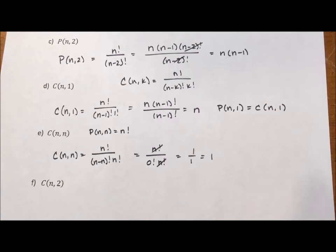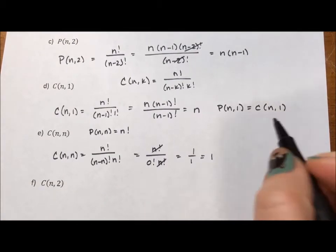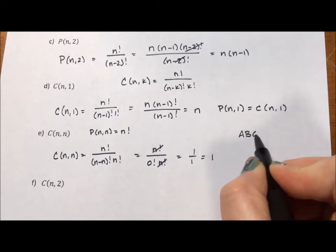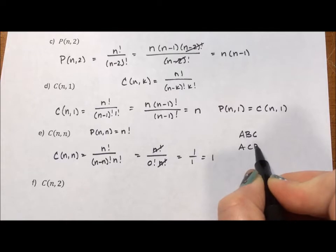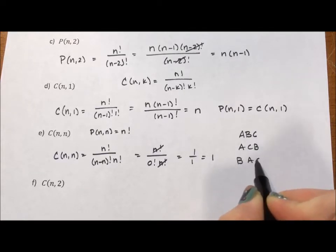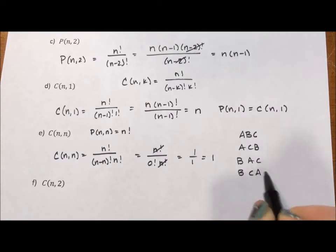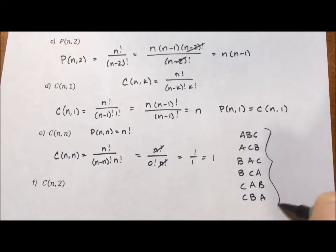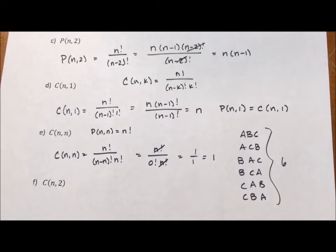This makes sense. If we look at three items, A, B, and C, I could write it as ABC, ACB, BAC, BCA, CAB, CBA. This is six different ways I could write the letters A, B, and C.